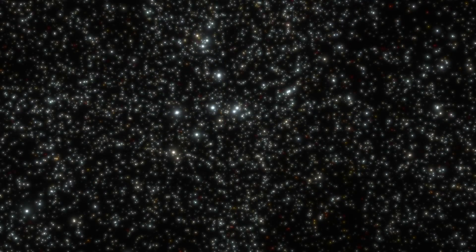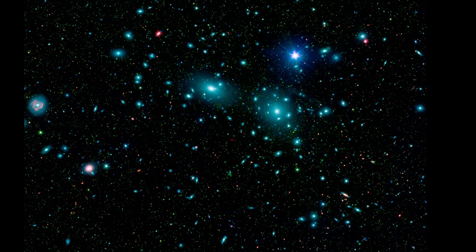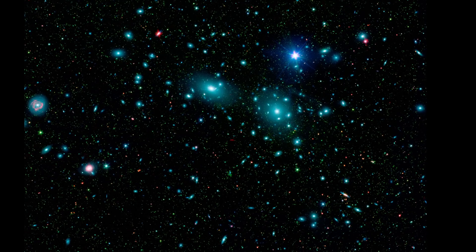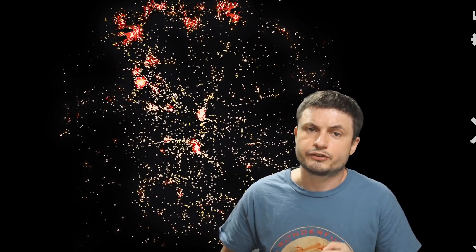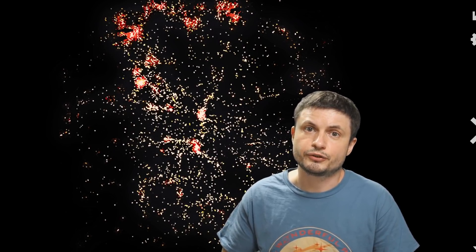Now interestingly, this cluster is right next to the famous Coma cluster. Coma cluster, which you can see right here, is much larger and much more massive, but it also seems to be much older. But they are next to each other and together they form what's known as the Coma supercluster, a really large structure that also happens to be part of a much larger structure, the structure you see right here known as CFA2 Great Wall.